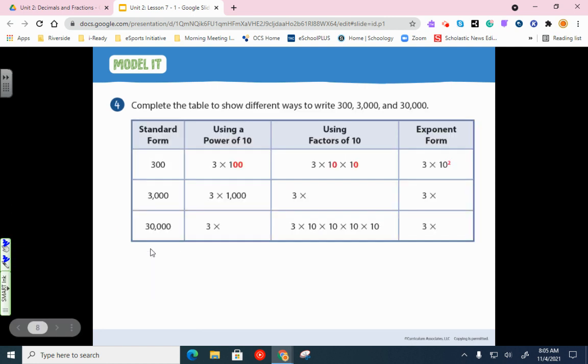Alright. So now we get a little more complex. Complete the table to show different ways to write 300, 3,000, and 30,000. So, we've got this different way of showing things called exponent form. So, it still uses the things we just learned in the table above, but it adds a little twist to it. So, let's look at the first row here. So, we have standard form is 300. We know you can get 300 by multiplying 3 times 100. And notice how they put the two 0s in red. That's to indicate to you that you can change it to this next column here of 3 times 10 times 10.